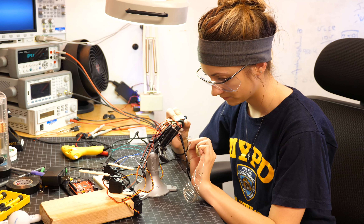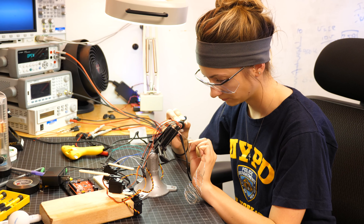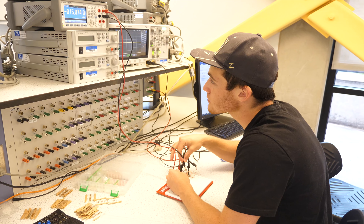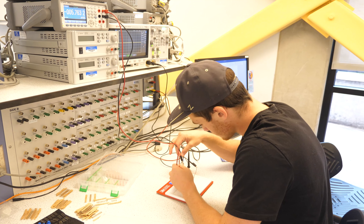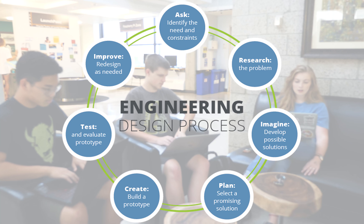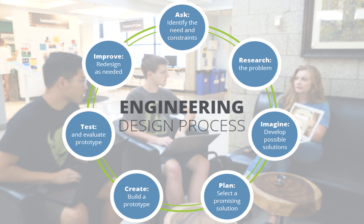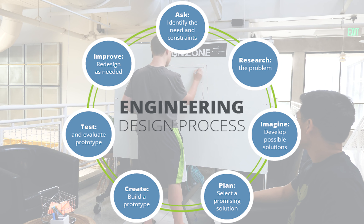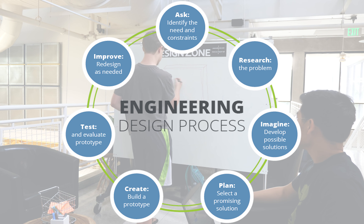The engineering design process is a tool that engineers use to guide their development of products and processes to make our dreams reality. Going through its steps helps engineers to empathize with the people who will use their finished products, learn from failure, and be creative problem solvers. The engineering design process is iterative, meaning engineers usually cycle through the process multiple times to get the best possible solution. The more times an engineering team iterates through the design cycle, the better the final solution will be.